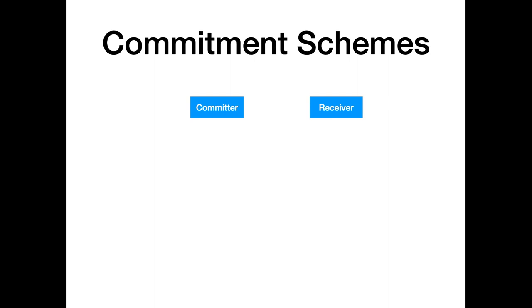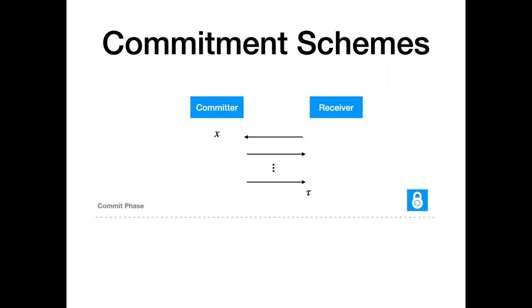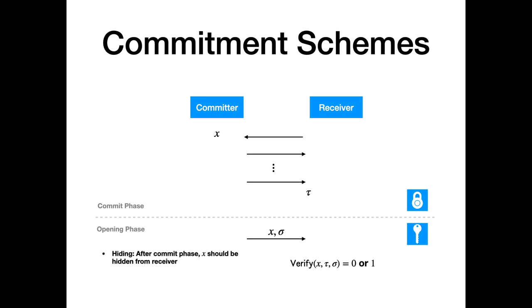A commitment scheme is a two-phase protocol between a committer and a receiver. The committer has a value x and first interacts with the receiver to commit to this value; later, the committer supplies an opening to x which the receiver verifies. Such a scheme requires two properties: the hiding property says the committed value should be hidden from the receiver until the opening phase, and the binding property says the committer shouldn't be able to open to any value other than the one committed to.